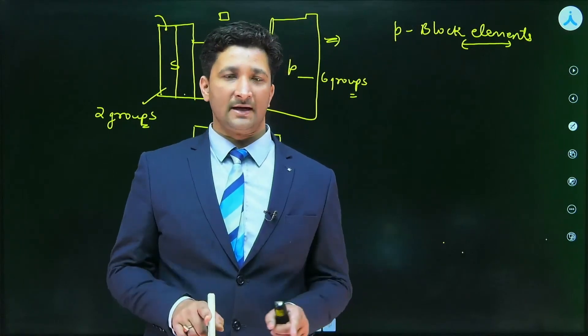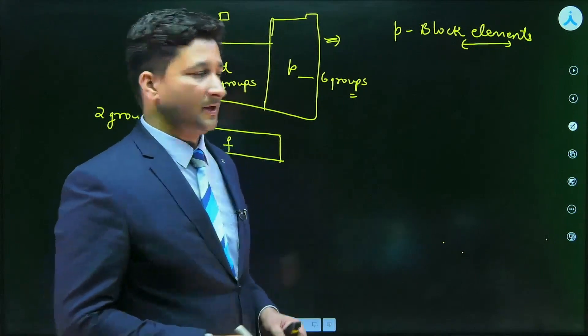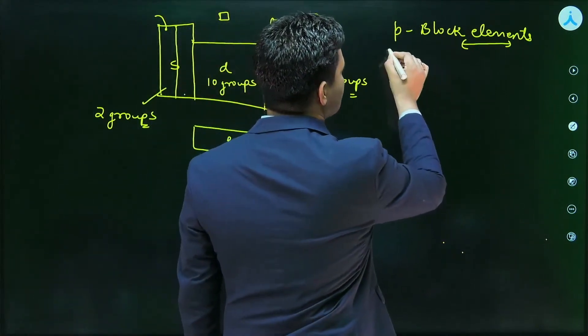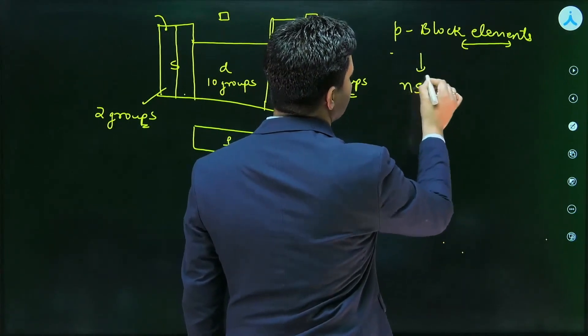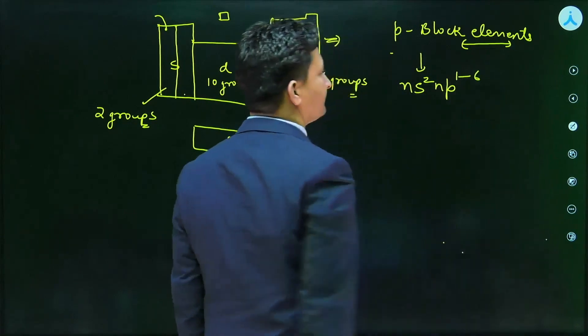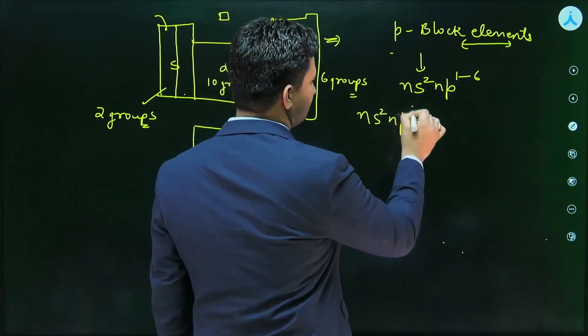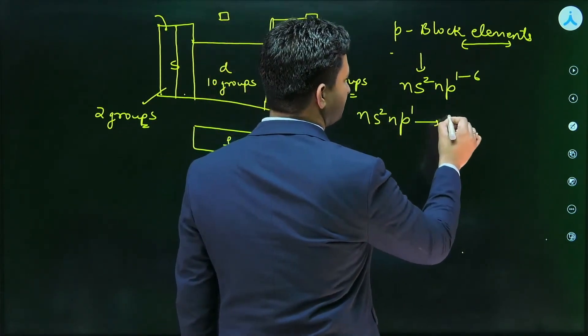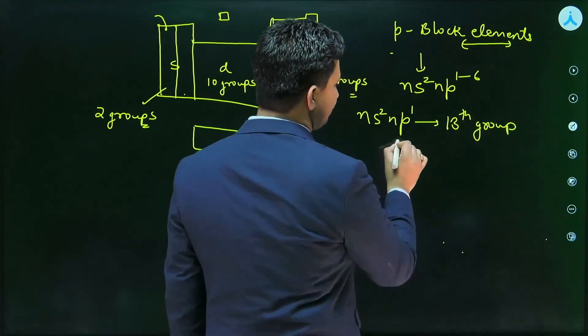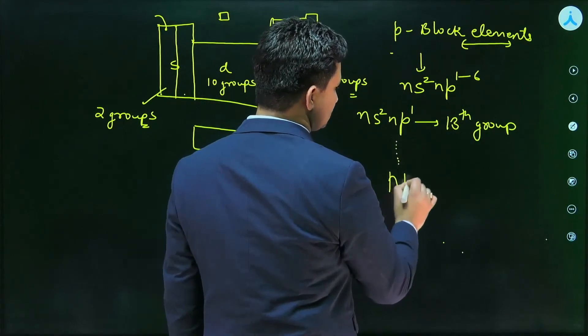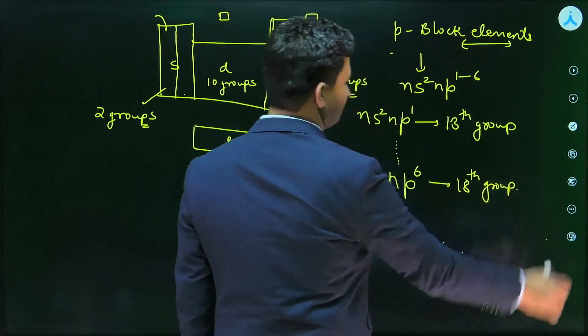And as P can accommodate maximum 6 electrons, it is having 6 groups. The general outermost electronic configuration for P block element is NS2NP1 to 6. If it is NS2NP1, then it is 13th group element, and P keeps on increasing. If it is NP6, then it is 18th group element.